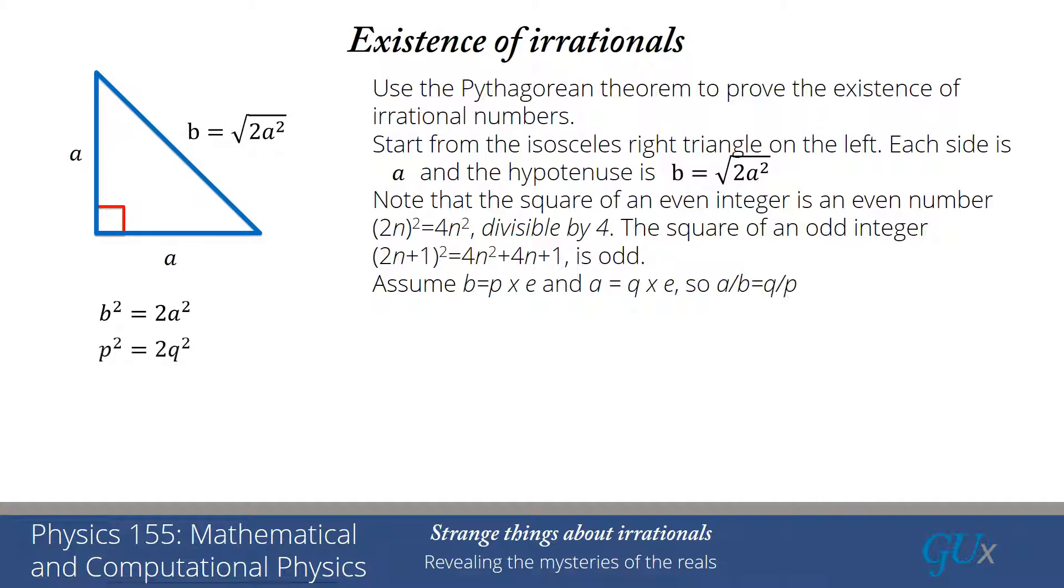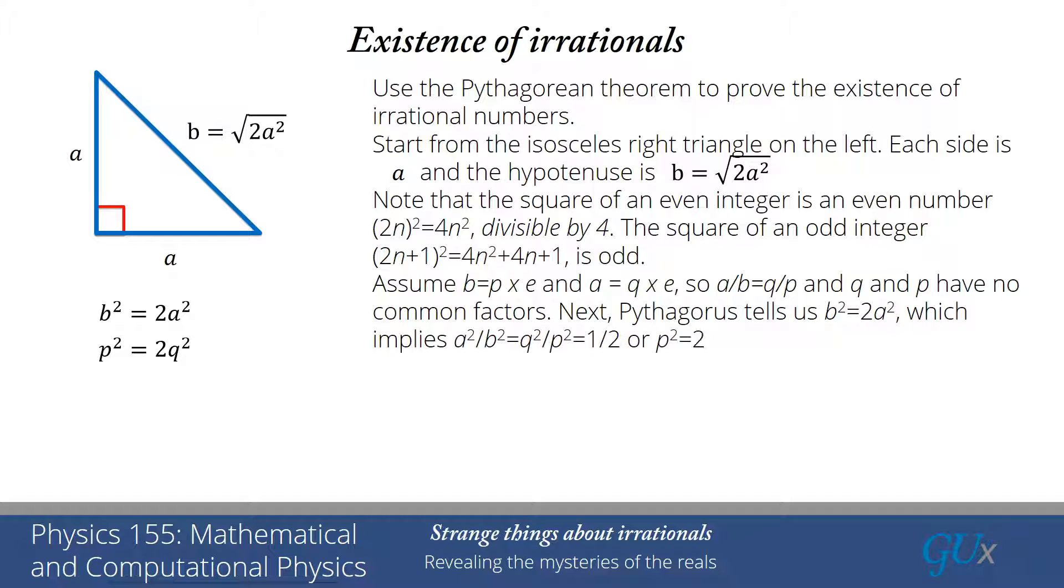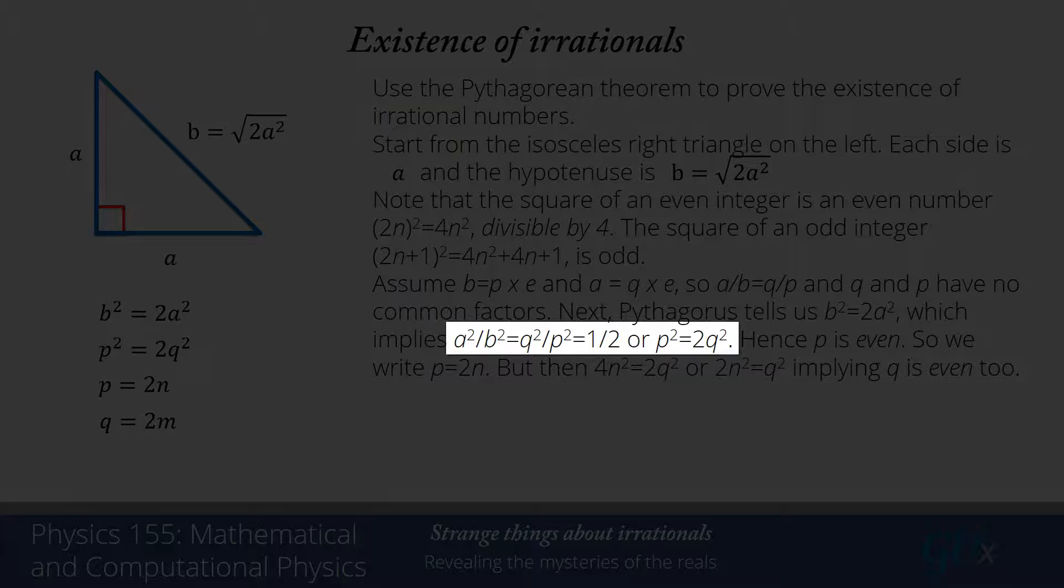Let's take b and write it as the product of two integers, p times e. And we'll take a and write it as the product of two integers, q times e, so that a over b is equal to q over p, and q and p have no common factors. This would be called writing the ratio of a over b in lowest terms. Now, the Pythagorean theorem tells us that b squared is equal to 2a squared. That implies, if I look at the ratio a squared over b squared equals q squared over p squared, that ratio must equal 1 half, and if I rearrange that, I find p squared is equal to 2q squared.